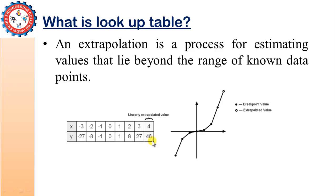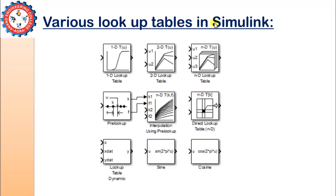There are various lookup tables in Simulink: 1D lookup table, 2D lookup table, N-dimensional lookup table, pre-lookup table, interpolation using pre-lookup, and a dynamic lookup table. Today I will cover the 1D lookup table, and in further lectures I will cover other lookup tables. Let's see how we can implement the concept discussed in the previous slides in Simulink.